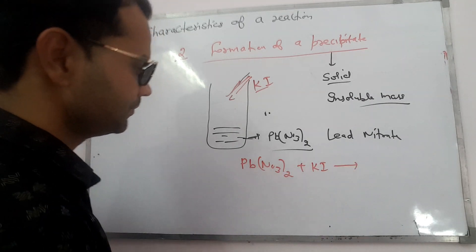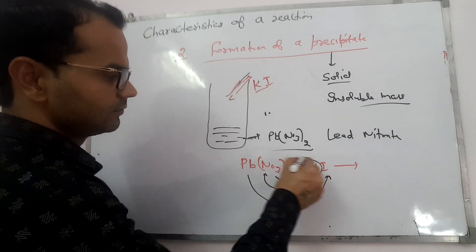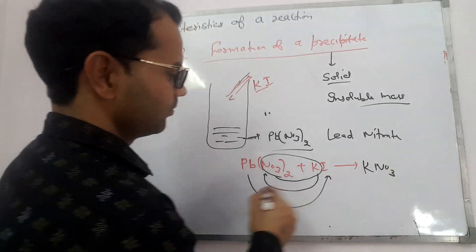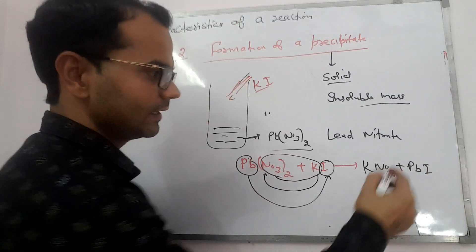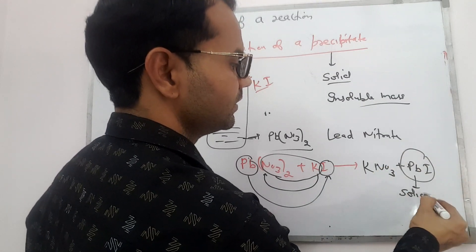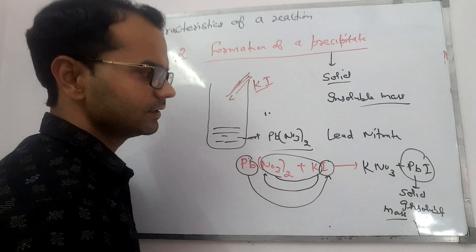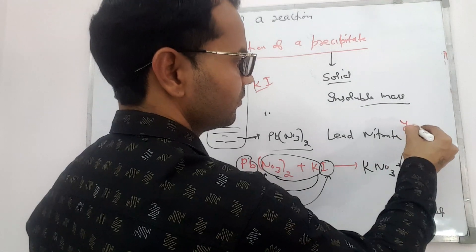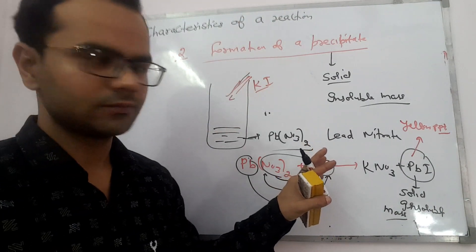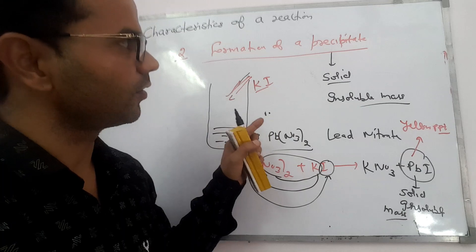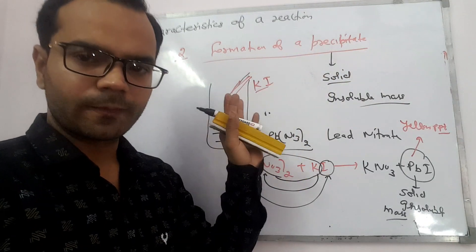A double displacement reaction takes place between lead nitrate and potassium iodide. As a result, potassium nitrate and lead iodide are formed. Lead iodide is a solid insoluble mass — a yellow precipitate. This is a very important and frequently examined topic — many exam questions have been asked from precipitation reactions.